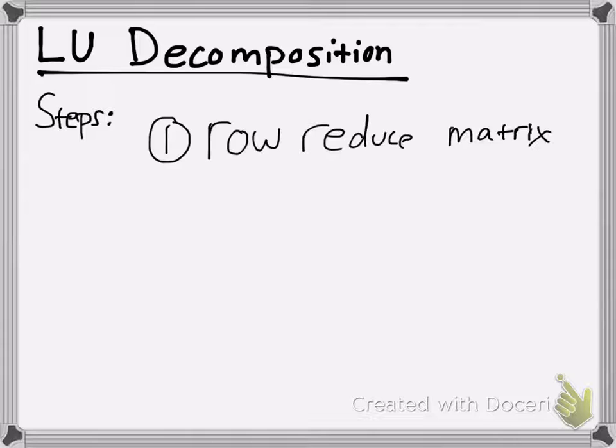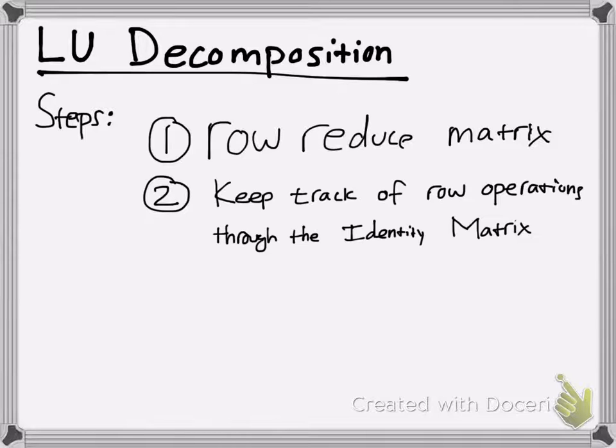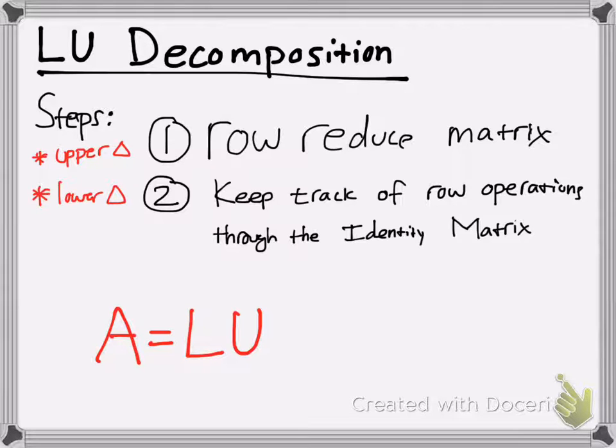Two main steps. One, row reduce your matrix as normal, like many steps you do in linear algebra. You always start with row reduction. The second step you're going to want to do is keep track of your row operations through the identity matrix. So if you know of elementary matrices, it's kind of showing the action done onto the matrix, and you keep track of those using the identity matrix. And why is this LU decomposition? What is it exactly? Well, you're splitting up a matrix into an upper triangular matrix and a lower triangular matrix. So A is your matrix, and you have your lower triangular and your upper triangular matrix.